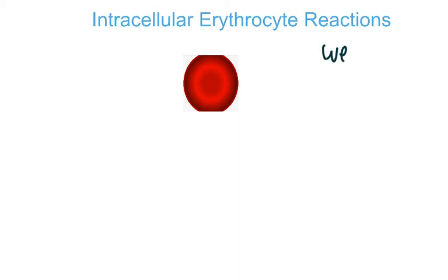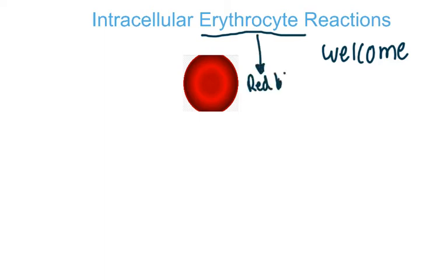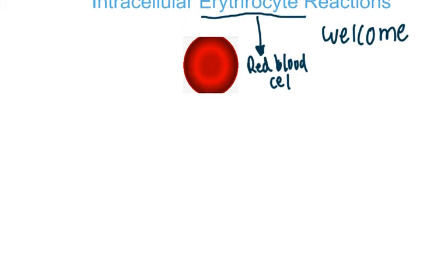Welcome back to Underground Science. In this video we'll be talking about intracellular erythrocyte reactions. An erythrocyte is another name for a red blood cell. We're going to build up to the Bohr effect and the Haldane effect, when we're talking about carbon dioxide, oxygen, and red blood cells.